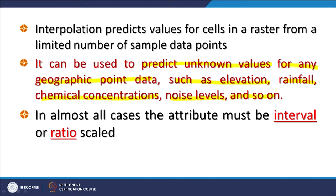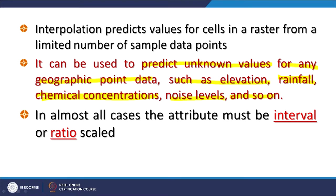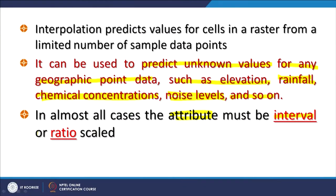Because of this property of spatial interpolation, we predict unknown values for any geographic point data such as elevation, rainfall, chemical concentration, noise level, and so on — many-many surfaces. Though sometimes loosely we call these digital elevation models, instead of elevation value we can have rainfall, chemical concentration in soil or water, water levels, or noise levels.